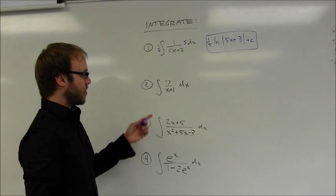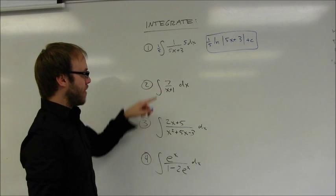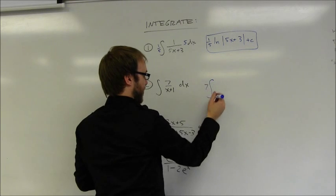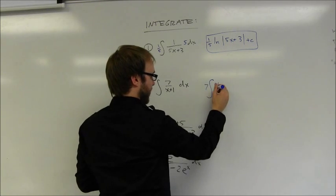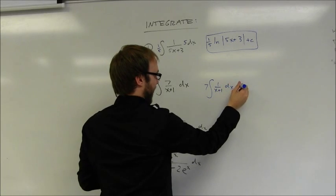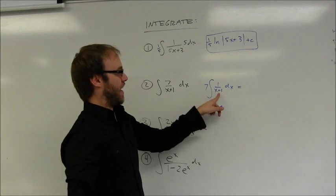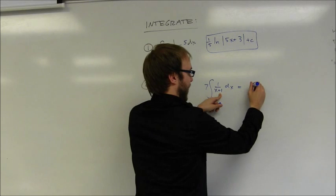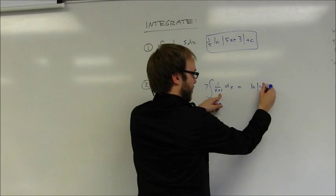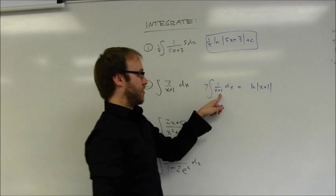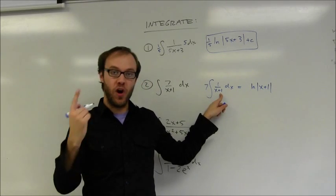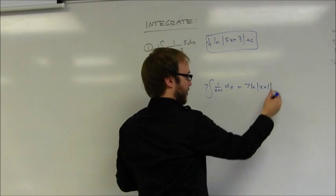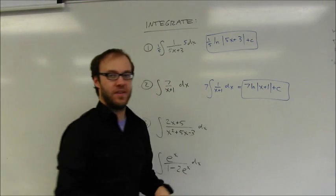The second example is again a reciprocal function. You may want to rewrite this by dividing a constant out in front of the integration symbol. The integral of a reciprocal function is the natural log of the absolute value of that expression. The derivative of the inside function is one, so I don't need to take that into consideration. I have a constant of seven out in front, and I add my constant value C, and I'm done.